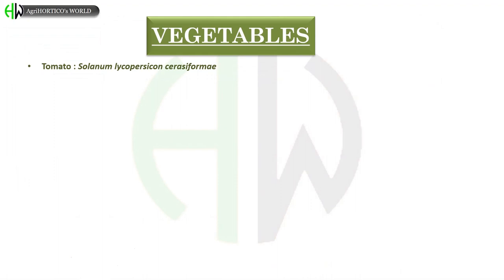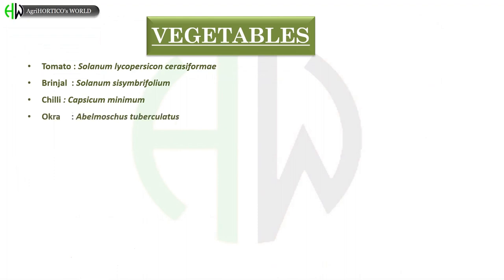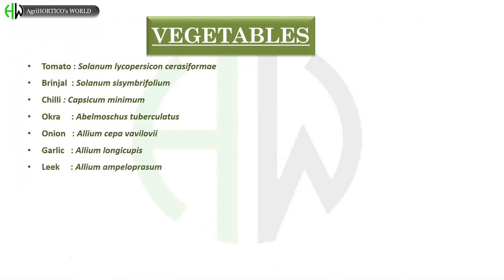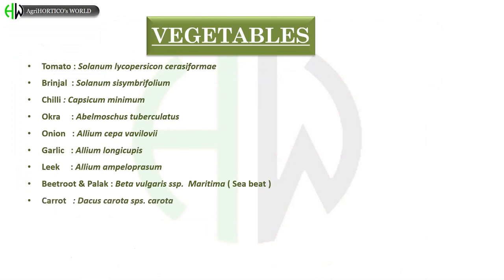Progenitors and ancestors of vegetables: Tomato – Solanum lycopersicon cerasiforme. Brinjal – Solanum sisymbriifolium. Chili – Capsicum minimum. Okra – Abelmoschus tuberculatus. Onion – Allium cepa vavilovii. Garlic – Allium longicuspis. Leek – Allium ampeloprasum. Beetroot and Palak – Beta vulgaris subspecies maritima, also called sea beet.